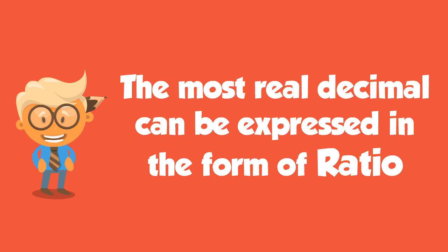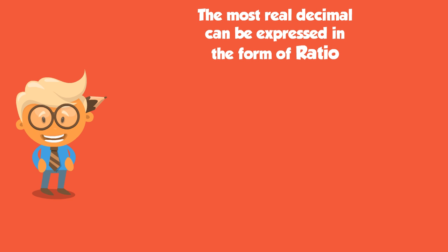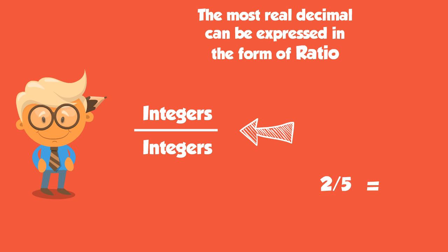Now, most real decimal numbers can be expressed as a form of ratio. What is meant by this? The number can be written as the ratio of 2 integers. Of course, the denominator cannot be 0. For example, 0.4 can be written as ratio 2 by 5. Minus 0.375 is minus 3 by 8.